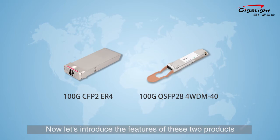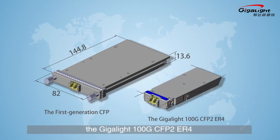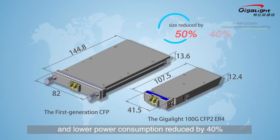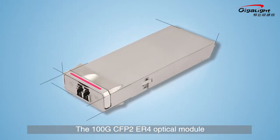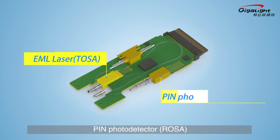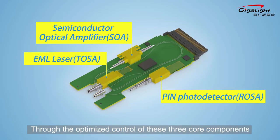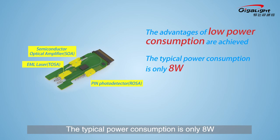Compared with the first-generation CFP optical module, the Gigalite 100G CFP2 ER4 has a smaller size reduced by 50% and lower power consumption reduced by 40%, improving the number of ports of core devices and the capability of data exchange. The 100G CFP2 ER4 optical module adopts the EML laser, PIN photo detector, and semiconductor optical amplifier. Through optimized control of these three core components, typical power consumption is only 8 watts.